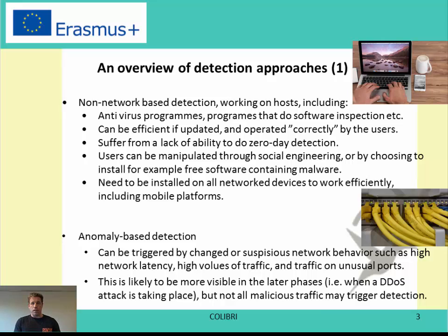Moving to anomaly-based detection, which takes place in the network. For example, when you have a DDoS attack going on, you can see a large increase in the amount of traffic — that is an anomaly you can detect. You will be looking for changes in network behavior such as growing network latency, higher volumes of traffic than usual from specific computers, or traffic on unusual ports, also often related to one or more computers in the network.